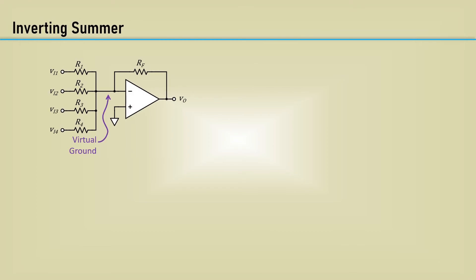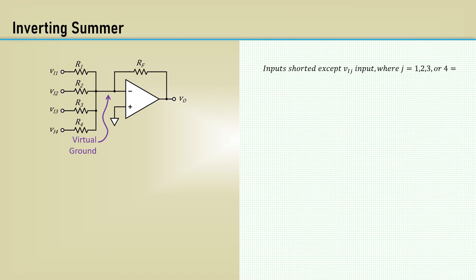The inverting summer is the basic op-amp circuit that's used to sum two or more signal voltages, or to sum a DC voltage with a signal voltage as an example. Here's an inverting summer with four inputs. If all inputs are grounded except the Vij input, where J equals 1, 2, 3, or 4, the inverting amplifier equation can be used for the particular Jth input selected. Using superposition, the total output voltage is given by this equation.